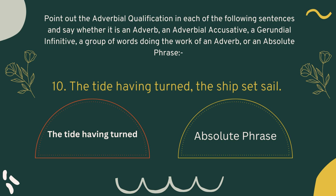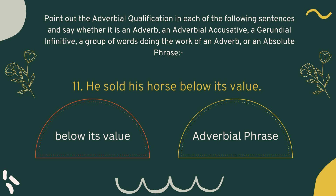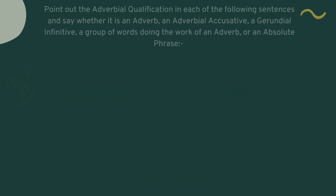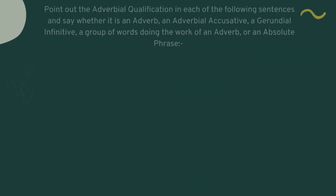Number ten: 'The tide having turned, the ships set sail.' Here 'the tide having turned' is the adverbial qualification and this is an absolute phrase. Number eleven: 'He sold his horse below its value.' Here 'below its value' is the adverbial qualification and this is an adverbial phrase. Number twelve: 'He leaves two children behind him.' The adverbial qualification is 'behind him' and this is an adverbial phrase.